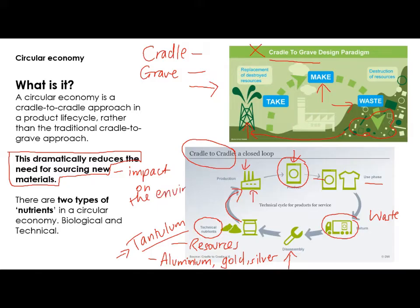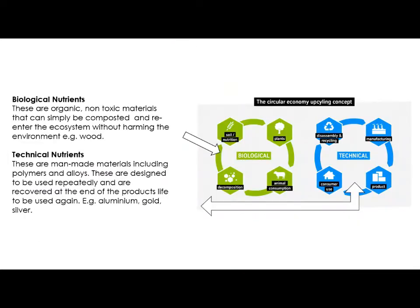You can see the benefit. The inspiration behind this is biology — the natural world. The natural world uses a cradle-to-cradle approach: the circle of life. There are two different types of nutrients in the circular economy and they are called biological and technical. This is what I was on about with the circle of life — this is nature at its best.